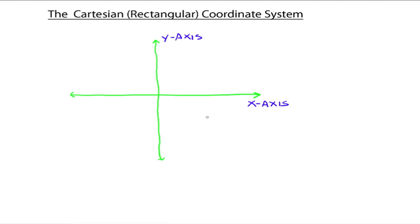These two axes form what is called the coordinate plane, or the Cartesian plane. If we label the horizontal axis x and the vertical axis y, then it's also called the xy plane. As you progress in mathematics, the axes could be given different names — like the t-axis and s-axis — but all the concepts stay the same.